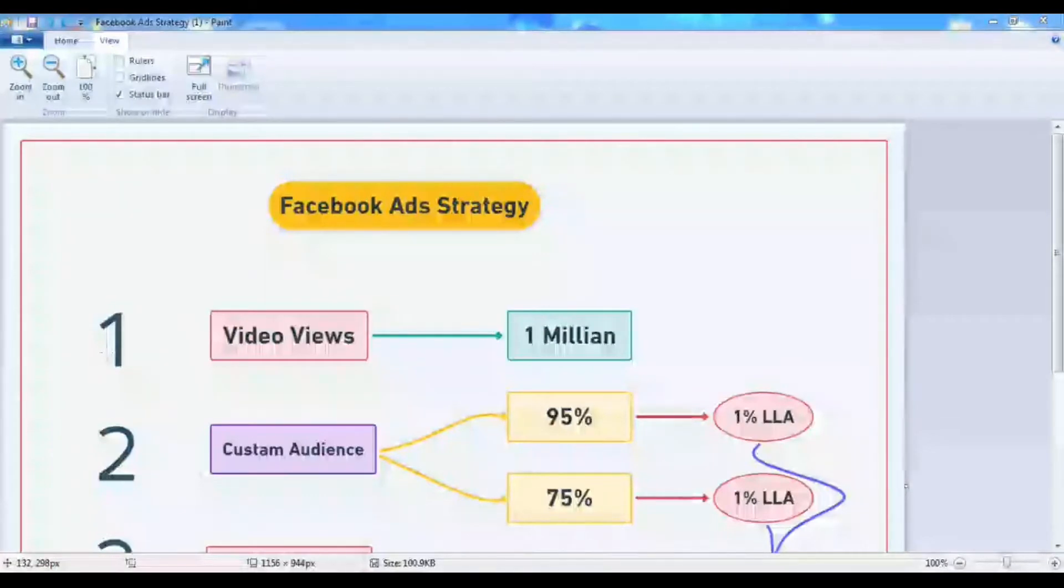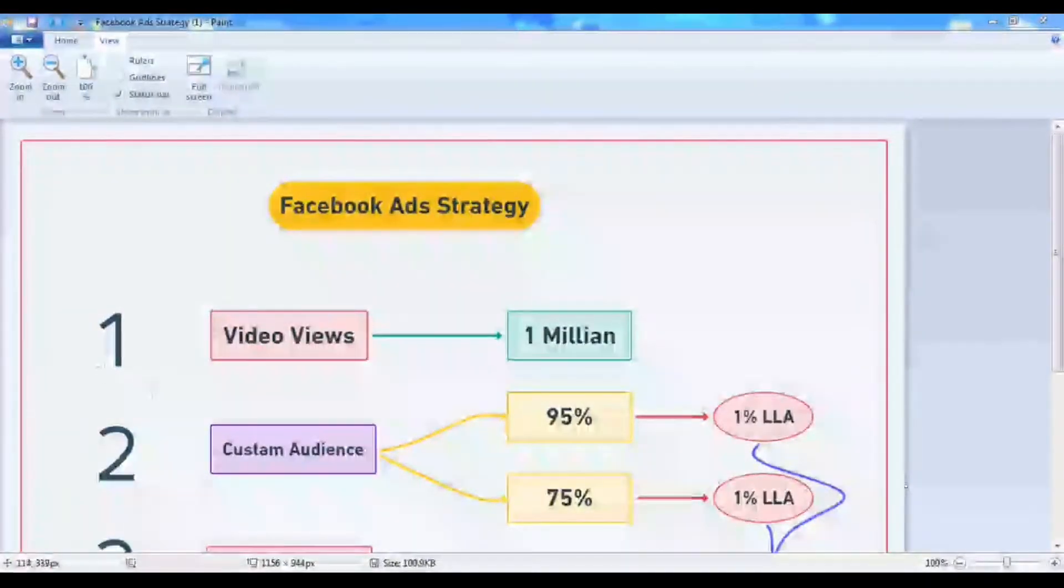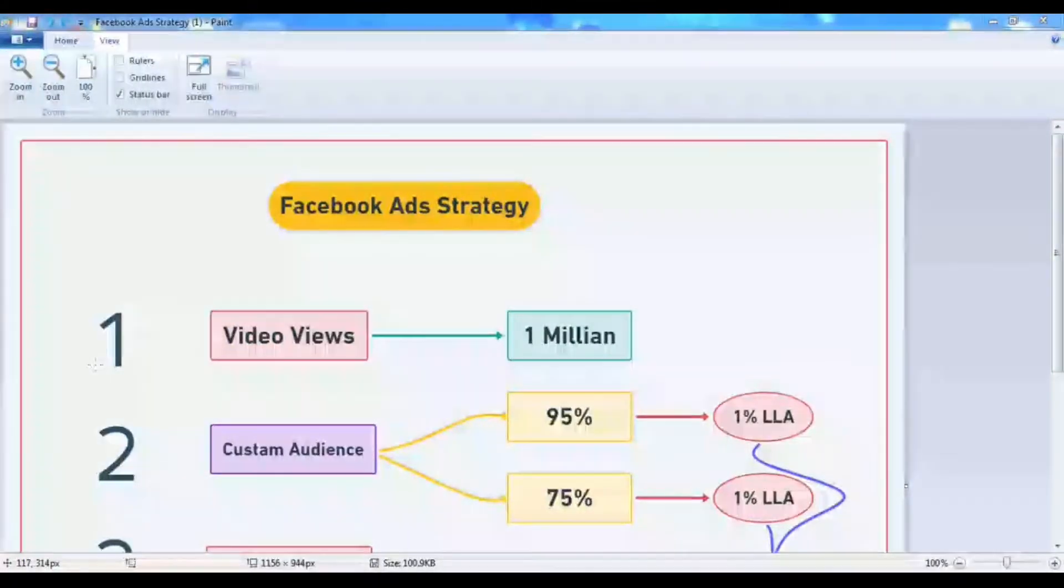The new strategy for that - get your video views to 1 million. Through organic reach you cannot do this because you already know that the organic reach on Facebook is zero. So through ads you can do this work - 1 million views you can bring on video. This is the first step.